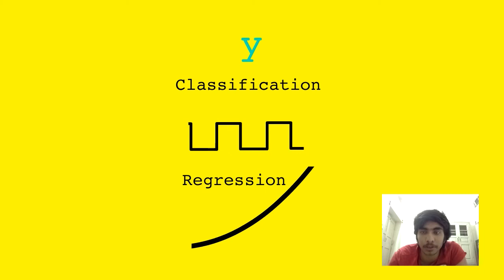Now Y could be a discrete valued output in which case it is called classification or it could be continuous in which case it is called regression.